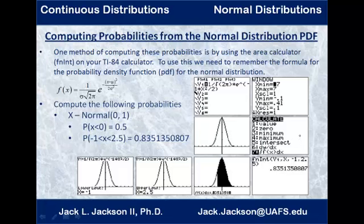Let's look at an example. We take this formula, plug in mu equals 0 and sigma equals 1. The numerator just becomes x squared, the denominator just becomes two, and sigma basically disappears. So our formula is one divided by the square root of two pi times e to the power of negative one-half times x squared. We put our PDF in Y1, set our window from negative seven to seven on x and negative 0.1 to 0.41 on y. That gives a decent looking graph.